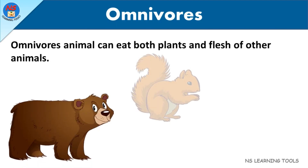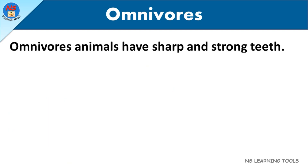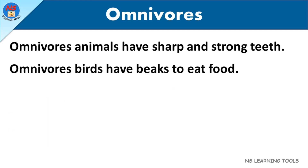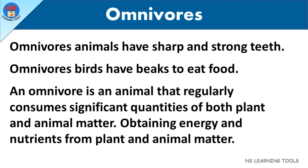Omnivores are animals that can eat both plants and the flesh of other animals. Here are a few examples of omnivorous animals. Omnivore animals have sharp and strong teeth. Omnivore birds have beaks to eat food. An omnivore is an animal that regularly consumes significant quantities of both plant and animal matter.